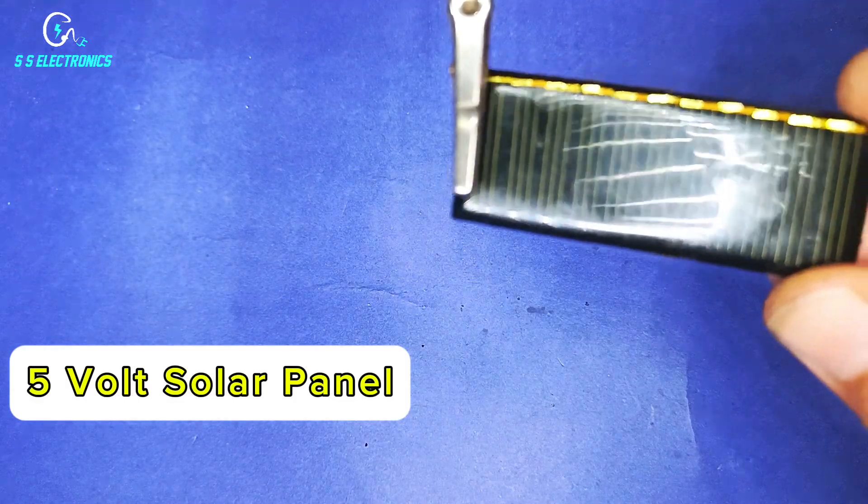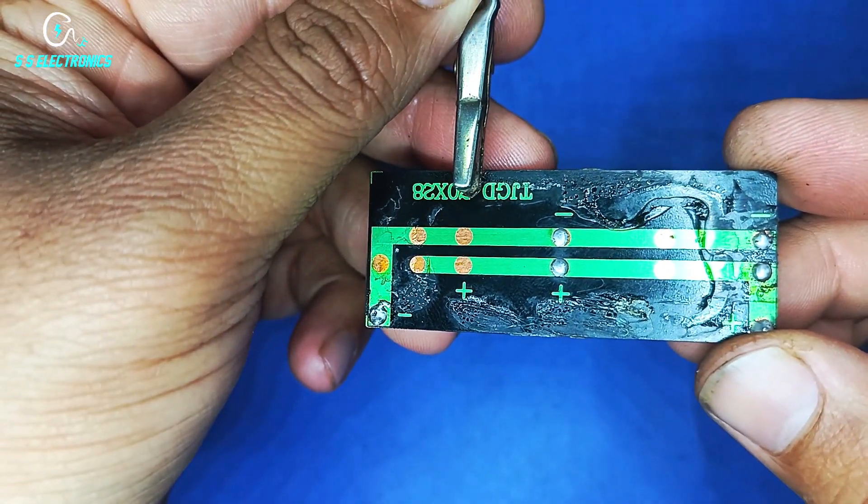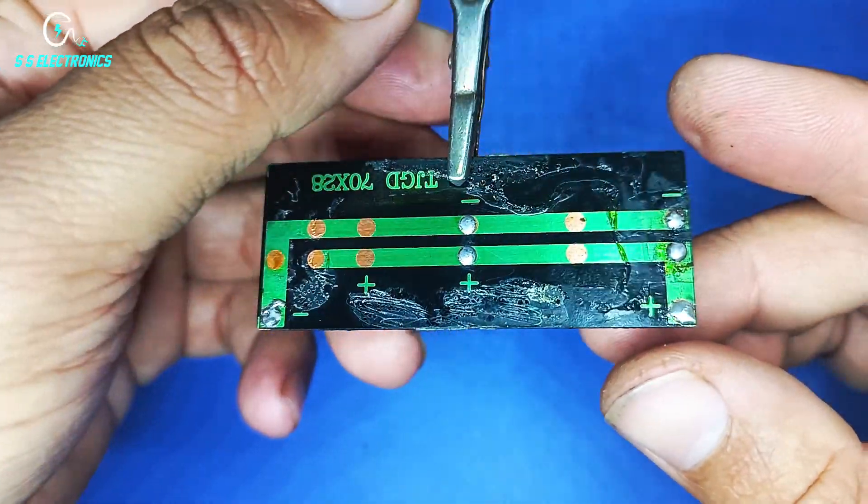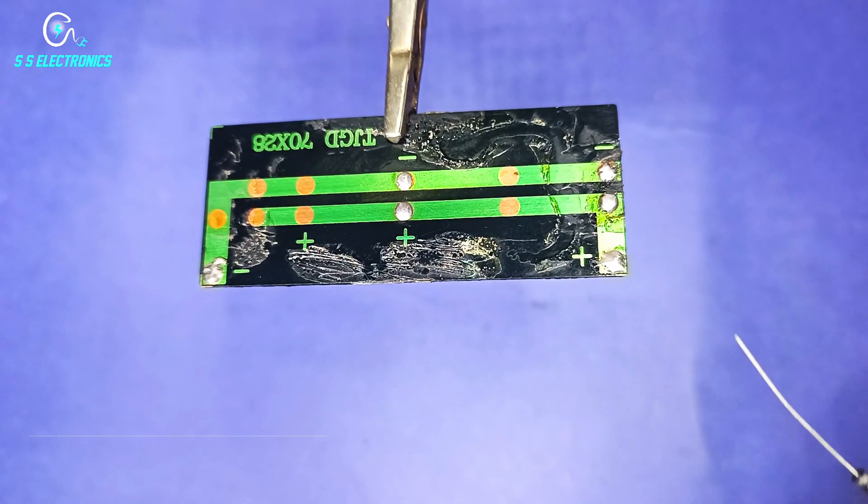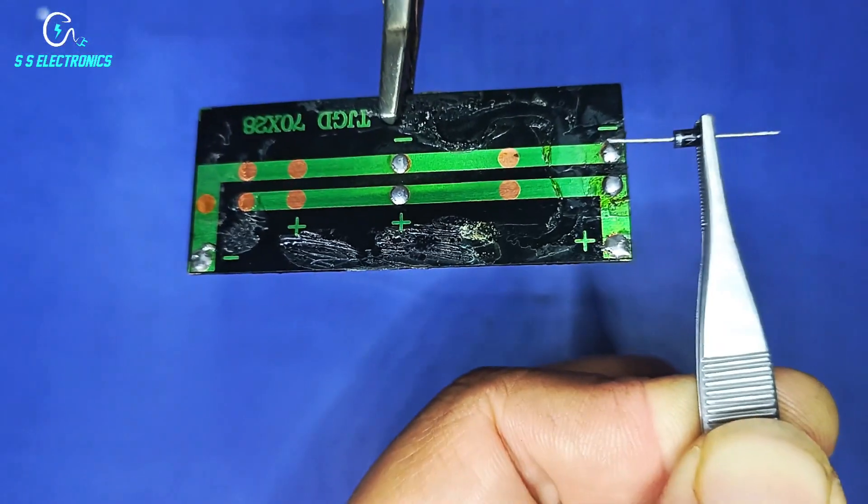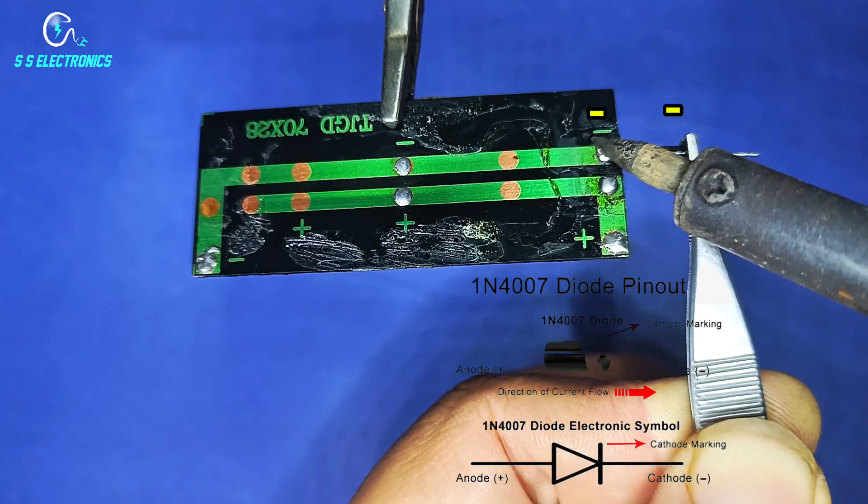5 volt solar panel and 4007 diode. Diode negative pin connecting with solar panel negative side.